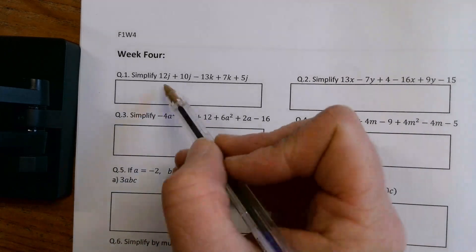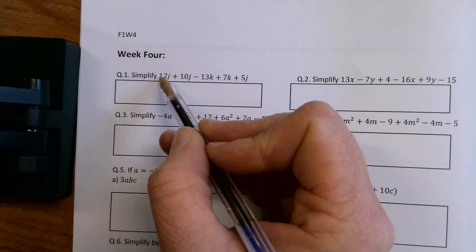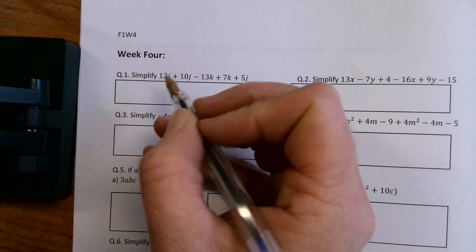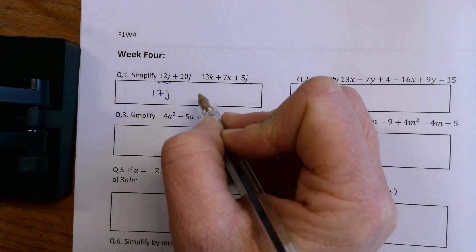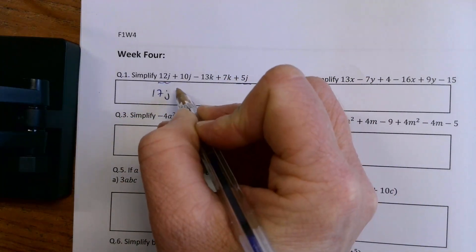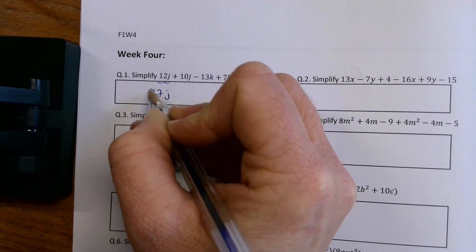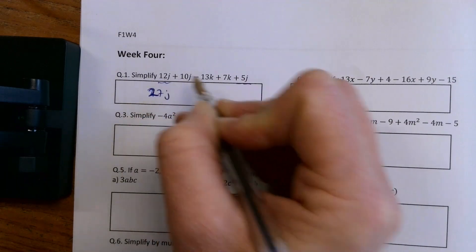Going through this, we're going to simplify means add together the things that are the same. We've got J's, so that's going to be 17J, 12J plus 5J. Oh, and another 10J. So actually we've got 27. 12 and 10 is 22 and 5 is 27J.